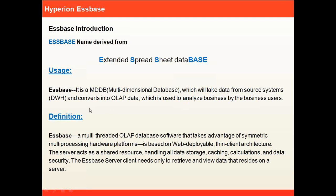It's a multidimensional database which takes the data from source systems — the source can be anything — and converts it into OLAP data which is used to analyze business by the business users. It's a technical definition: multi-threaded OLAP database software that takes advantage of symmetric multi-processing hardware. This means multiple threads can execute at the same time — high availability and high utilization of data speed. It's web-deployable, meaning you can access this product from anywhere in the world using the respective URL, with in-plan architecture.